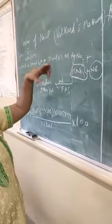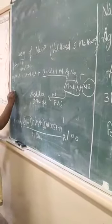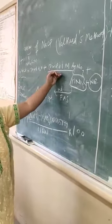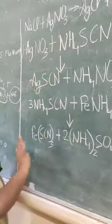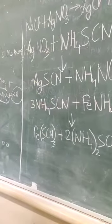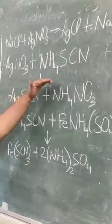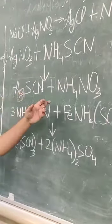First understand the equations, then I will explain the role of nitrobenzene. Sodium chloride taken in the conical flask reacts with excess silver nitrate - we are taking 50 ml of silver nitrate. So this is a back titration in which initially sodium chloride reacts with silver nitrate to give silver chloride, and then the excess or unreacted silver nitrate is back titrated with ammonium thiocyanate taken in the burette, to give silver thiocyanate plus ammonium nitrate.